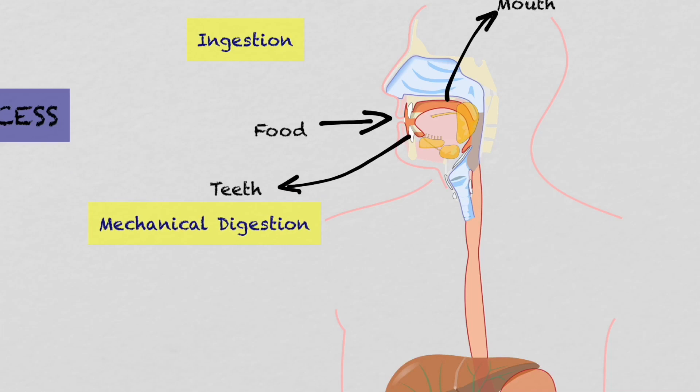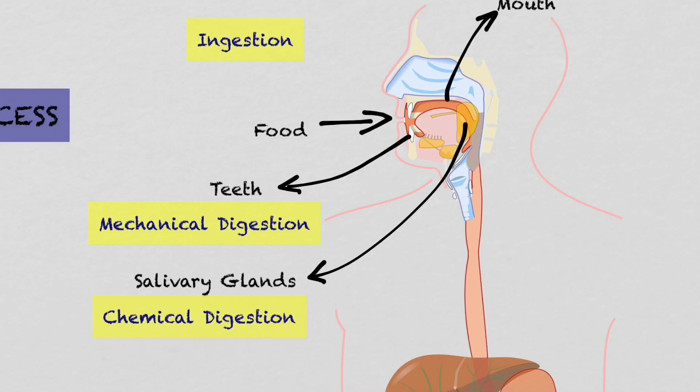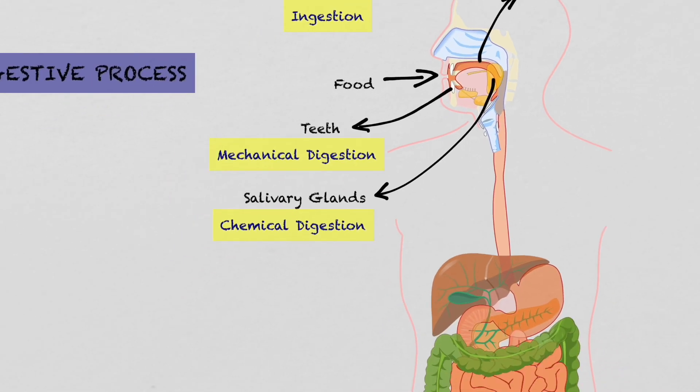The second accessory structure are the salivary glands. The salivary glands produce saliva. This liquid carries out the chemical digestion of the food. The chewed food mixed with saliva is called bolus.